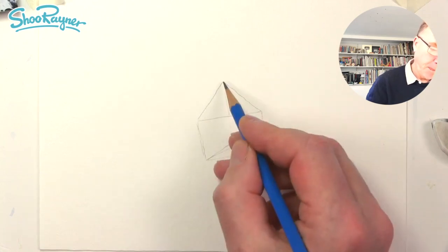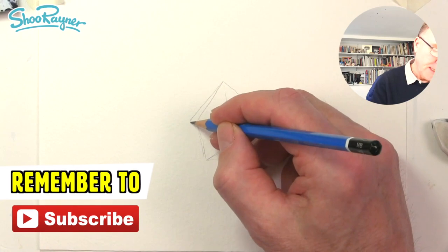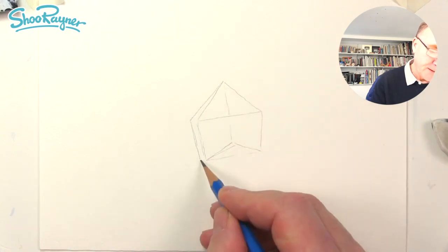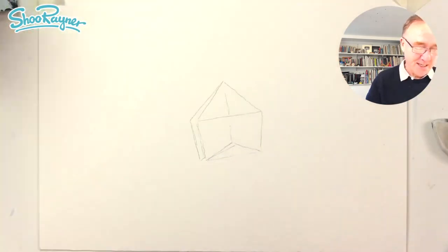From this point we want to come over to about there and draw a similar kind of thing coming down here to get the idea of this kind of space in the middle here.